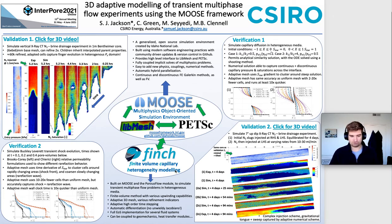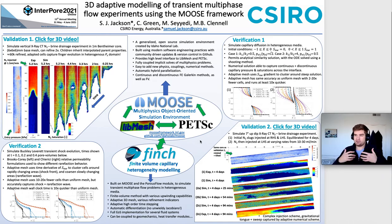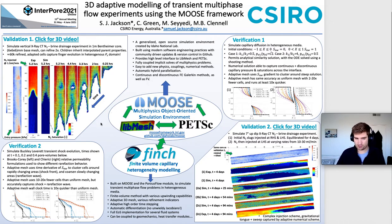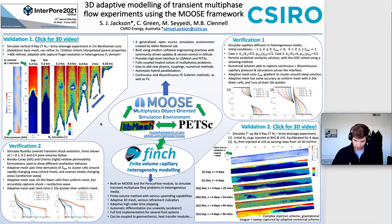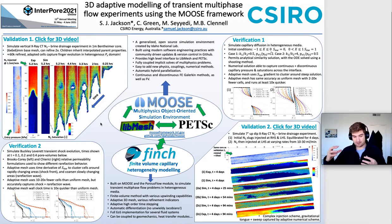What we wanted to do with FINCH was to build an app as part of MOOSE, built on the porous flow module in particular, to simulate transient flow problems in really heterogeneous media. We wanted to do this with a finite volume approach because of having discontinuous saturations in the domain, as well as with adaptive meshing, which is really key — especially when we have fingering and very dynamic, unstable flow situations.